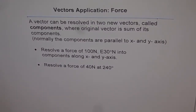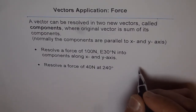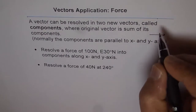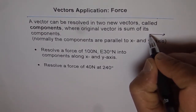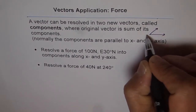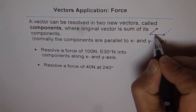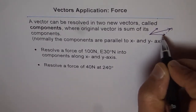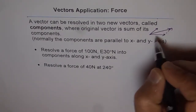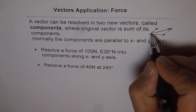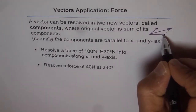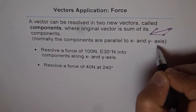Vectors have applications in force. As you know, you can add vectors and get a resultant. For example, if you have vector u in one direction and vector v in another, you can add them by making a parallelogram, which gives a resultant vector. On the other hand, a vector can be resolved into its components — the two sides of your parallelogram.